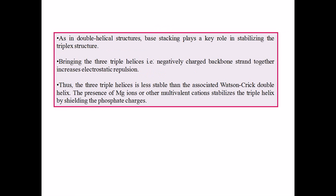As in double helical structures, base stacking plays a key role in stabilizing the triplex structure, along with hydrogen bonding. An important consideration when bringing three triple helixes together is that all three phosphate-sugar backbones are negatively charged. Binding these three negatively charged backbone strands together increases electrostatic repulsion, making the triple helix structure less stable than the associated Watson-Crick double helix.